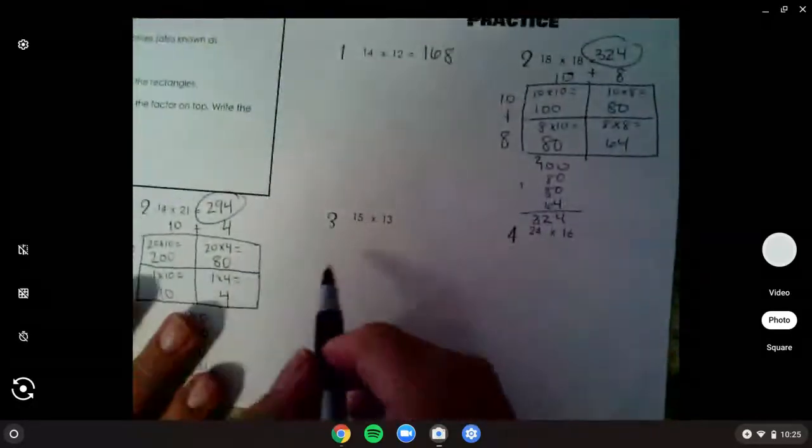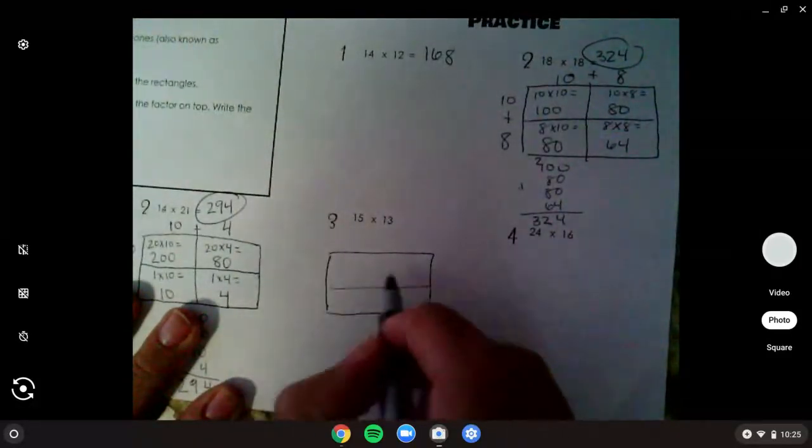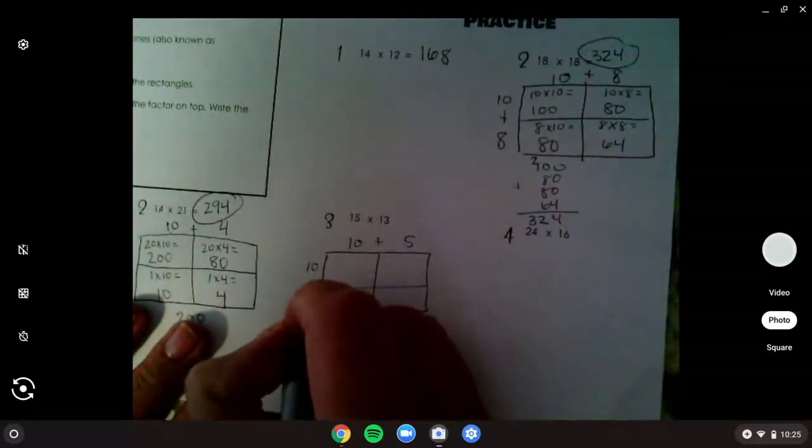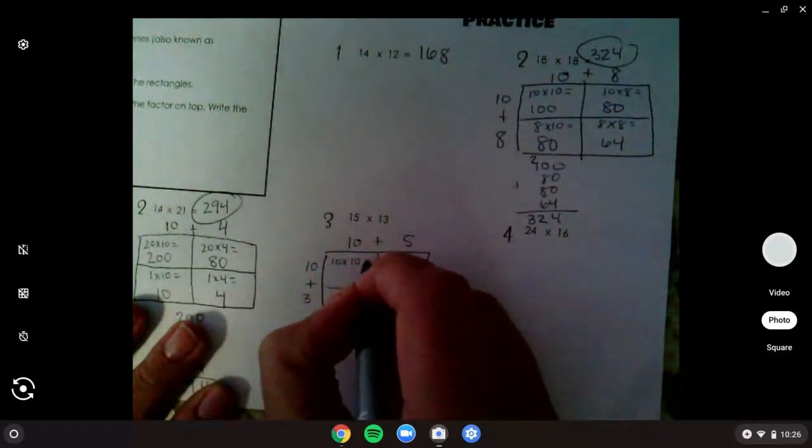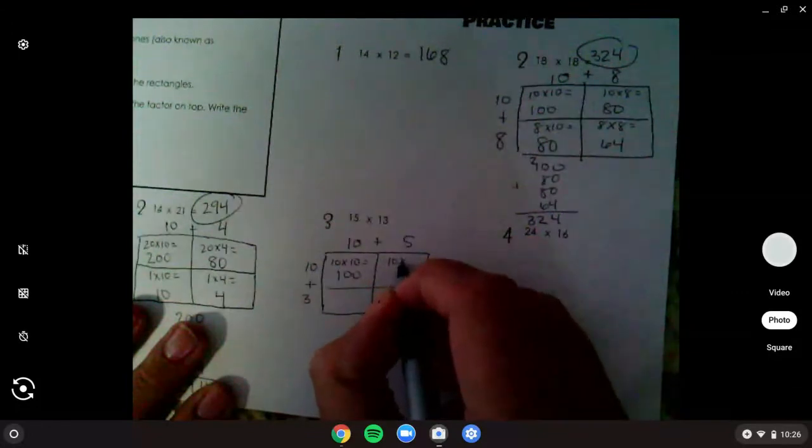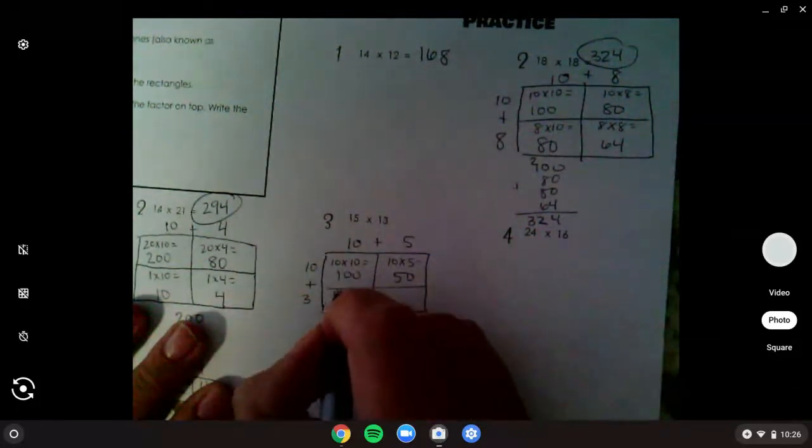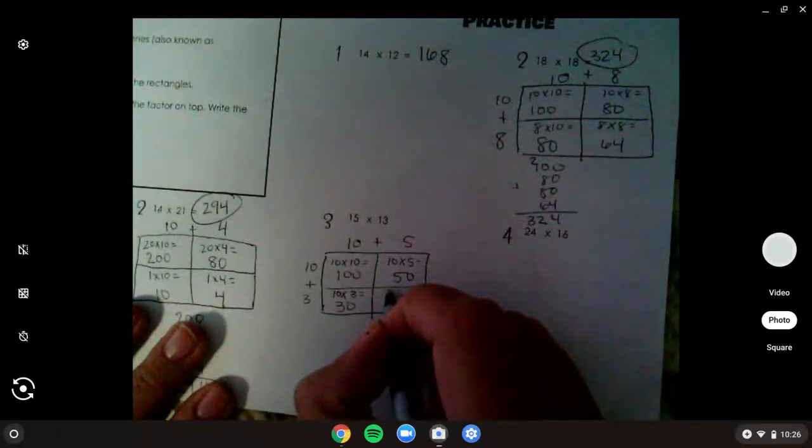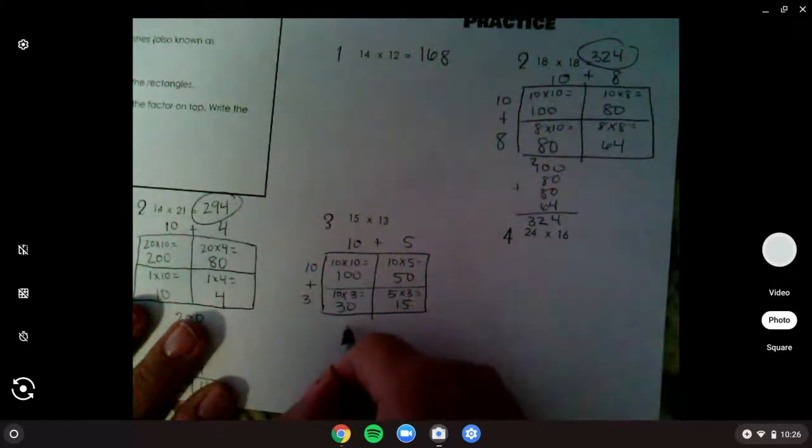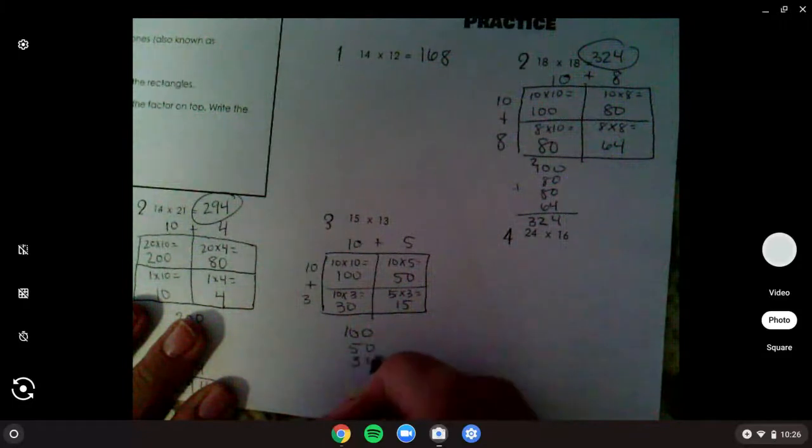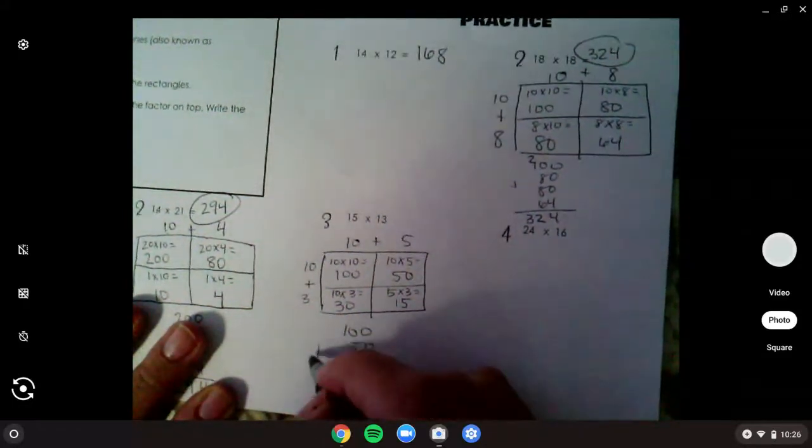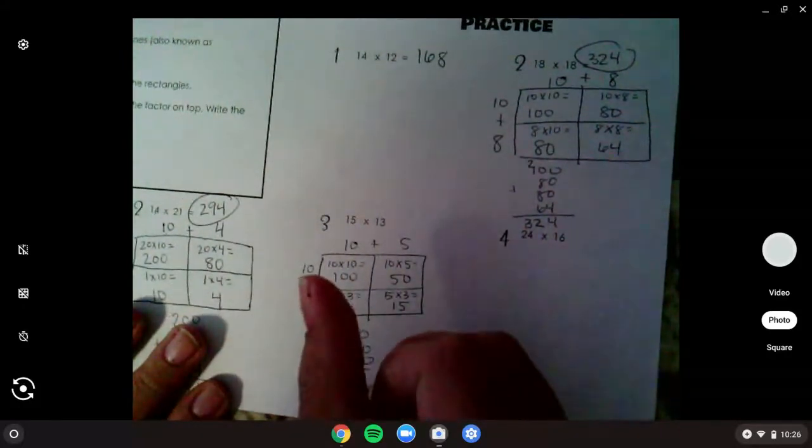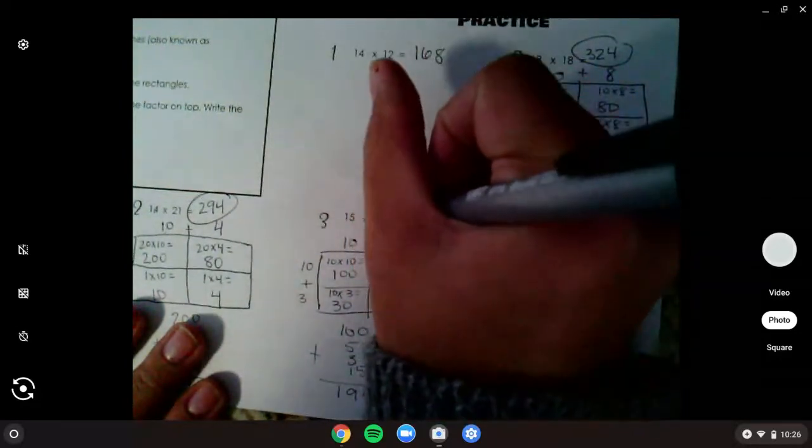For number 3, should have made your square or rectangle, split it into fourths. 10 plus 5 and 10 plus 3. 10 times 10 equals 100. 10 times 5 equals 50. 10 times 3 equals 30. And 5 times 3 equals 15. 100, 50, 30, and 15. Line up your partial products. Add them together, that's 5, 5, 6, 7, 8, 9, 195 for that product.